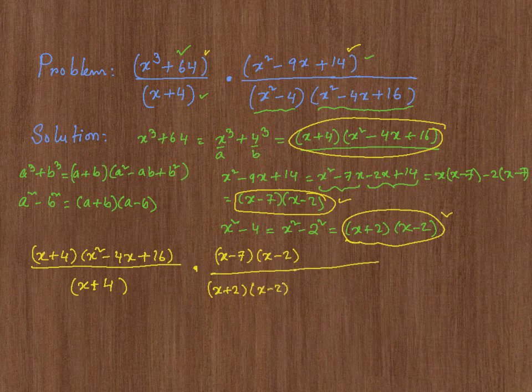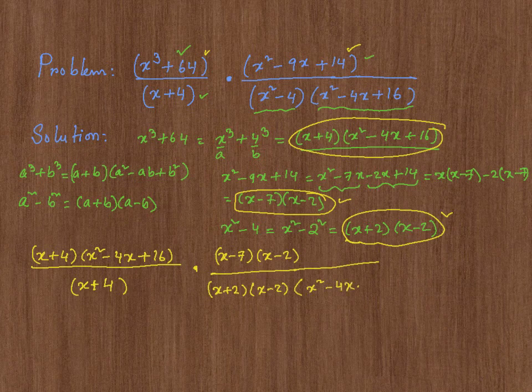Then the last thing is x squared minus 4x plus 16, which is this term. Now you can see there will be a lot of cancellations that you can perform.